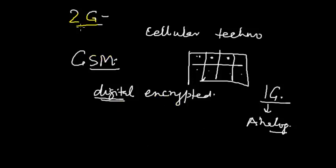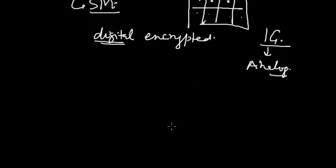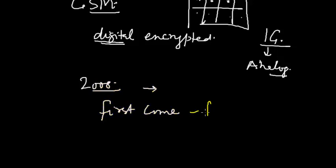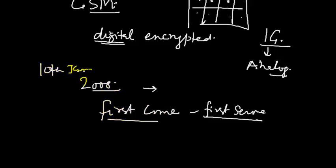It all happened in 2008, during the earlier UPA — United Progressive Alliance — government. The policy of 'first come, first serve' was introduced, originating from an earlier government. However, on January 10, 2008, companies were given only a few hours to supply the letter of intent and payments.